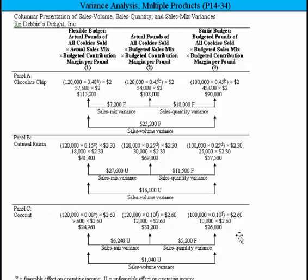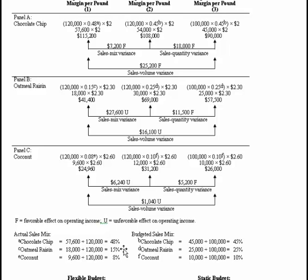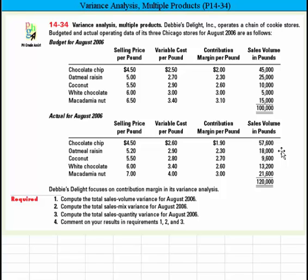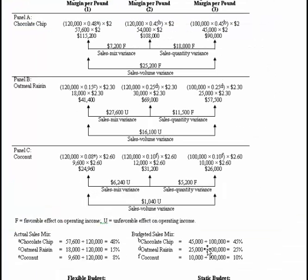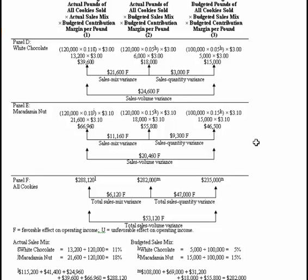Under Oatmeal Raisin and Coconut, we use the exact same approach, doing that for each variety of cookies. The only difference is we use a different percentage of the total — for Oatmeal Raisin it's 15%. We had 18,000 actual cookies sold versus 25,000 budgeted for that category. You can stop the presentation to review any of this, but there's no need to repeat it — it's exactly the same whether we're doing it for Chocolate Chip, Oatmeal, Coconut, or White Chocolate Macadamia Nut.